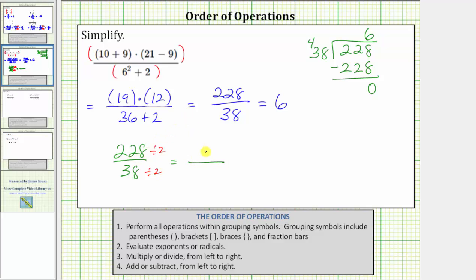228 divided by 2 is equal to 114. 38 divided by 2 is equal to 19. At this point, we would have to recognize that 19 is a factor of 114.